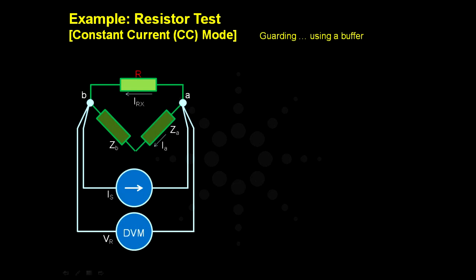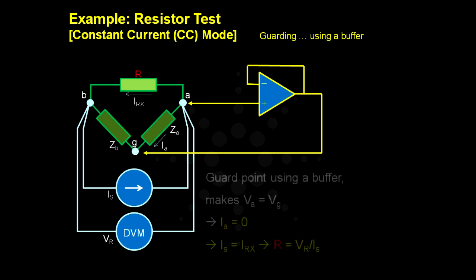To eliminate the leakage current IA, a guard point is added at point G. This time, the guard point connects a buffer between point A and point G. This makes the potential at point A and G equal. So no potential difference exists to drive current IA.